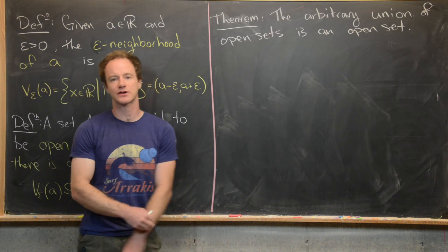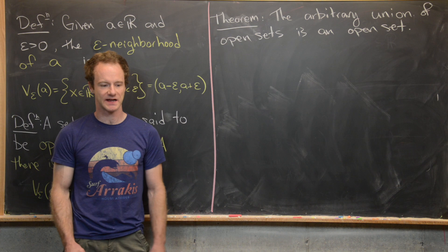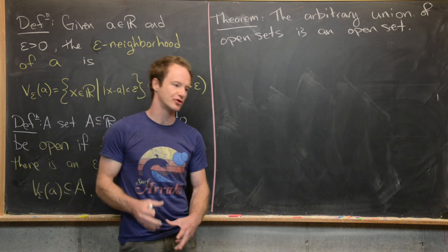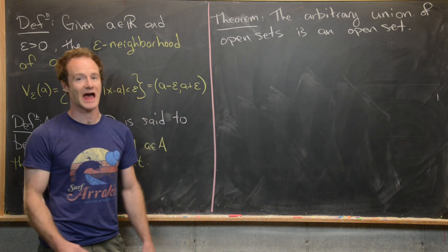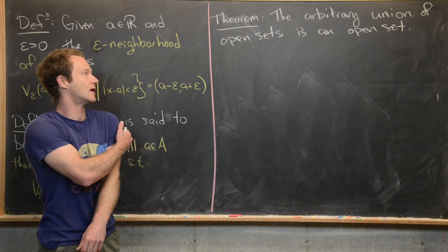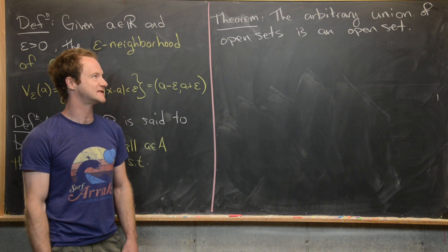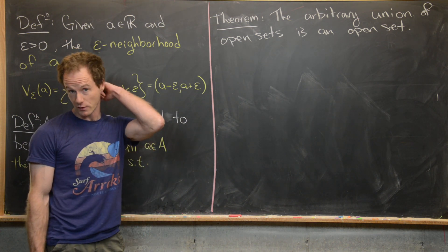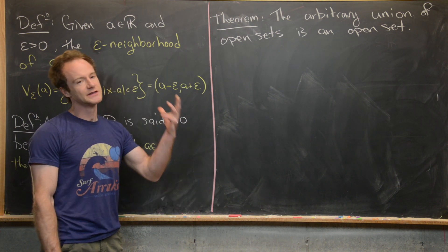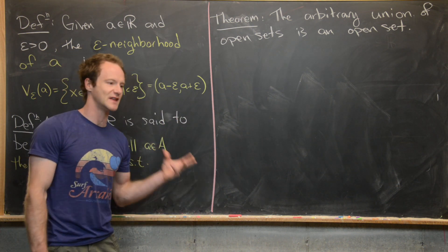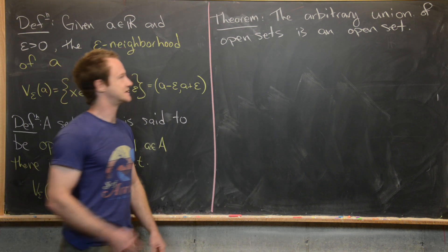Now we'll prove a classic result on unions and intersections of open sets — a result that is true in an arbitrary topology, but here we're looking at the topology on the real number line. The first result says that the arbitrary union of open sets is an open set.